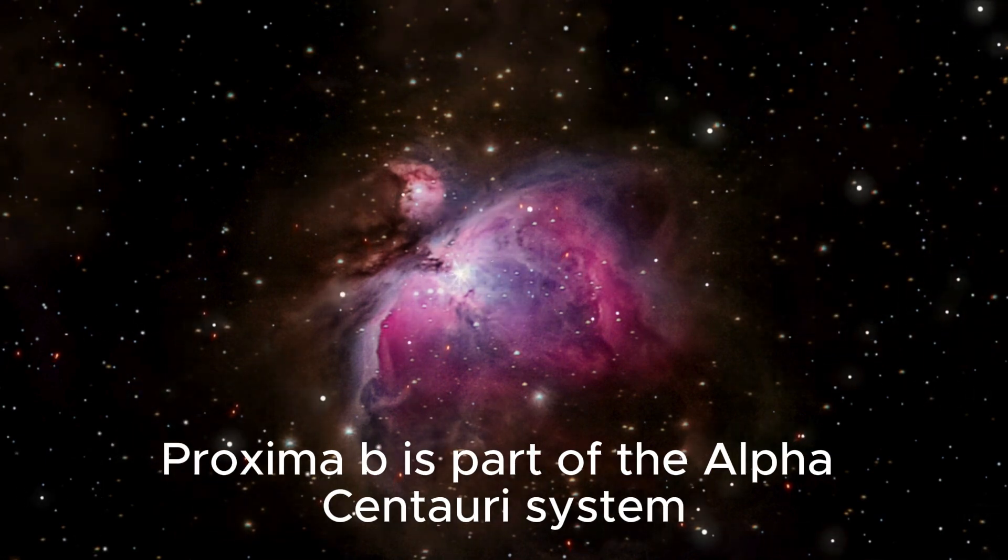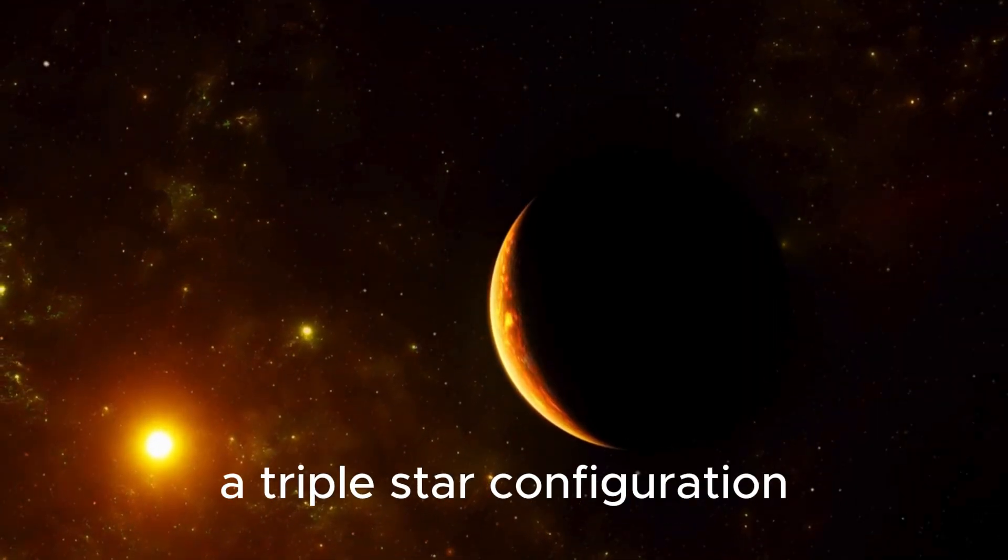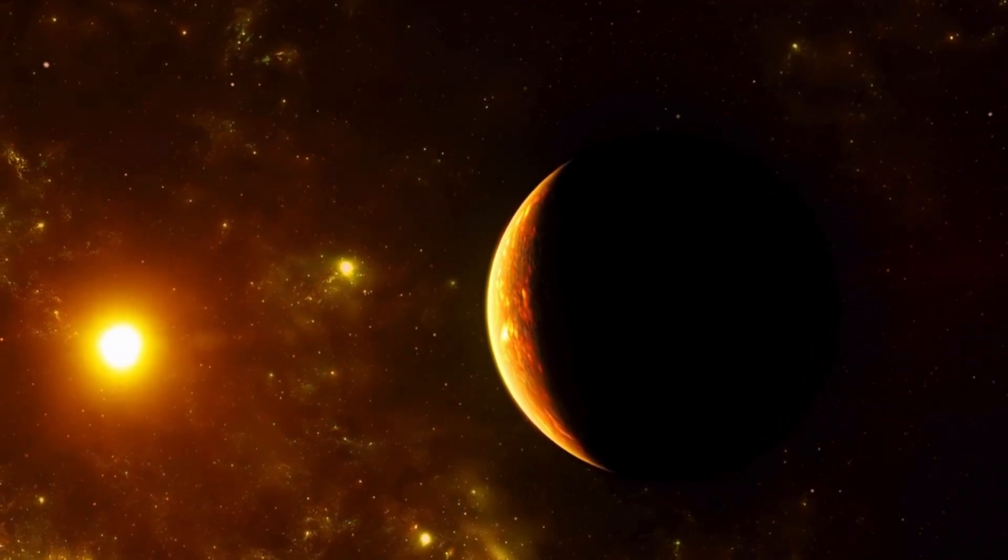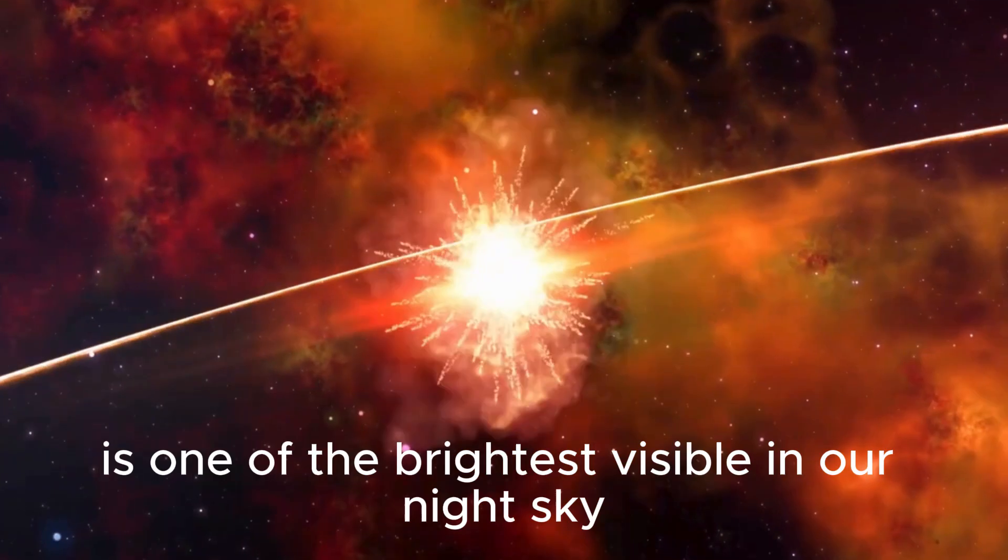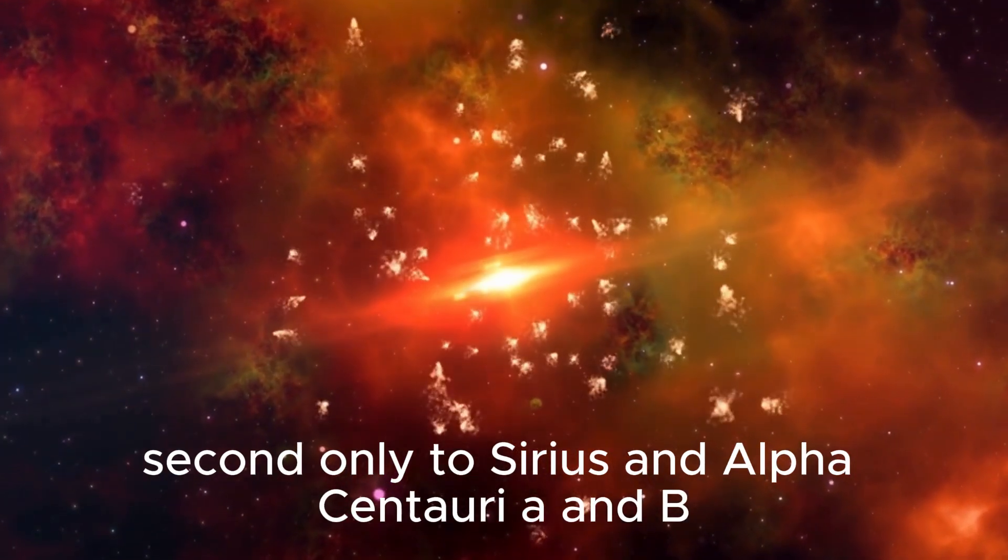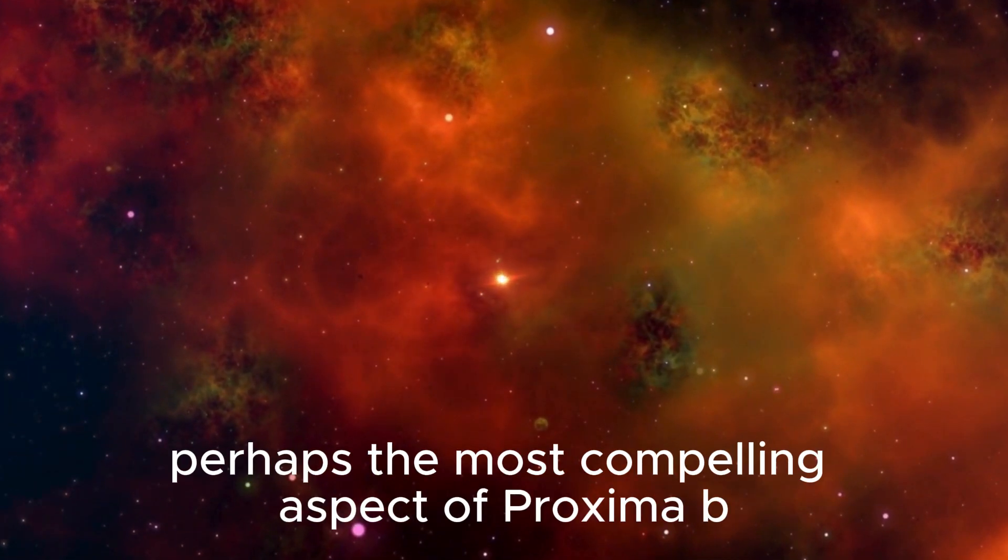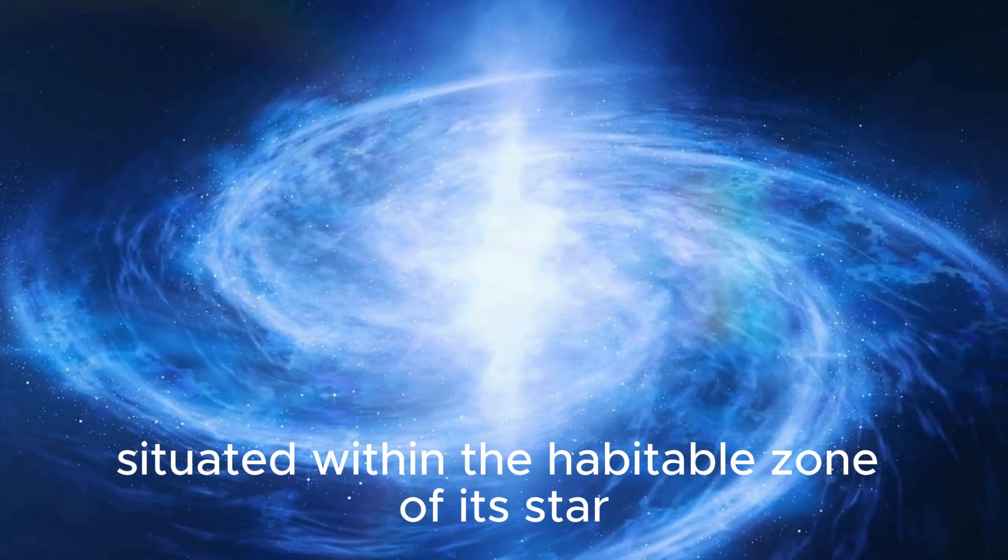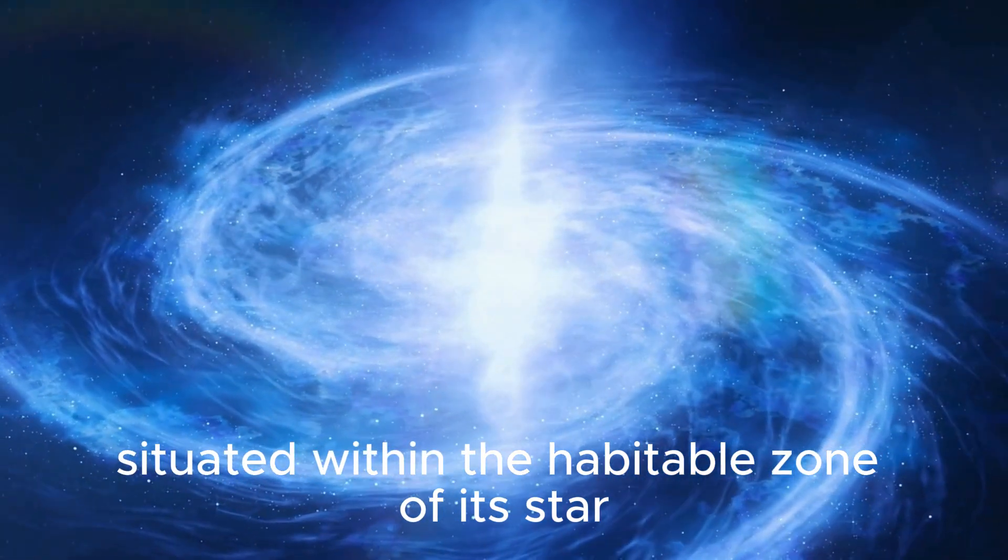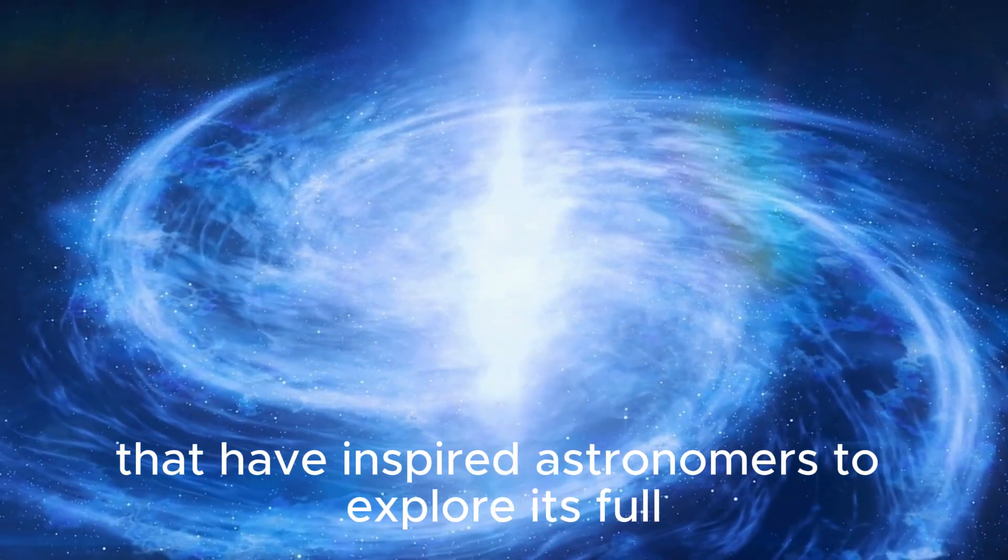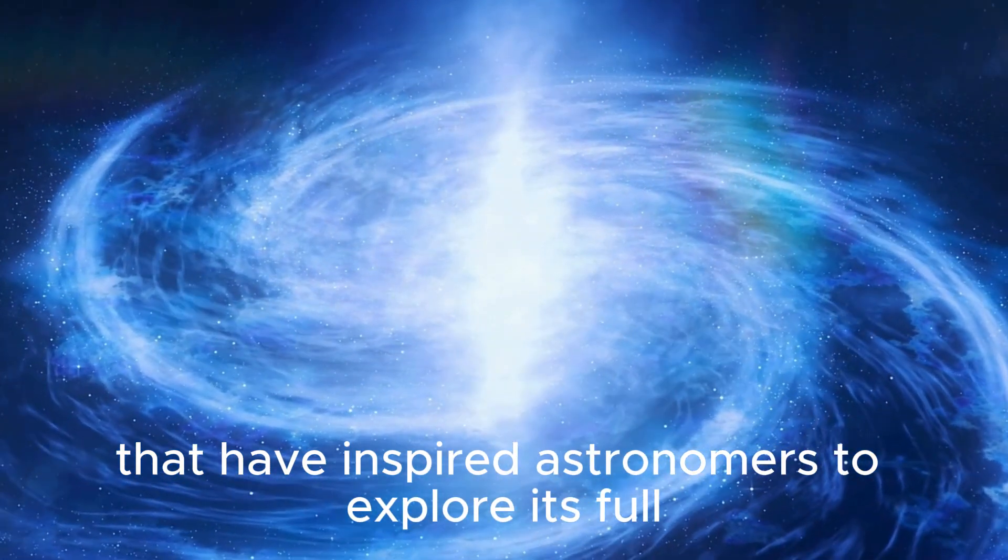Proxima b is part of the Alpha Centauri system, a triple star configuration. Although Proxima Centauri is relatively dim, the system as a whole is one of the brightest visible in our night sky, second only to Sirius and Alpha Centauri A and B. Perhaps the most compelling aspect of Proxima b is its potential habitability. Situated within the habitable zone of its star, this exoplanet offers tantalizing possibilities that have inspired astronomers to explore its full potential.